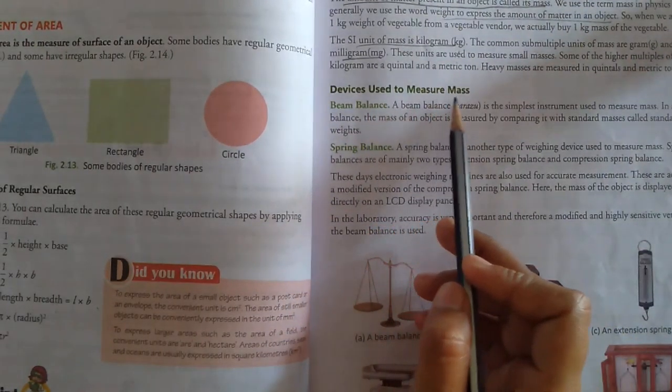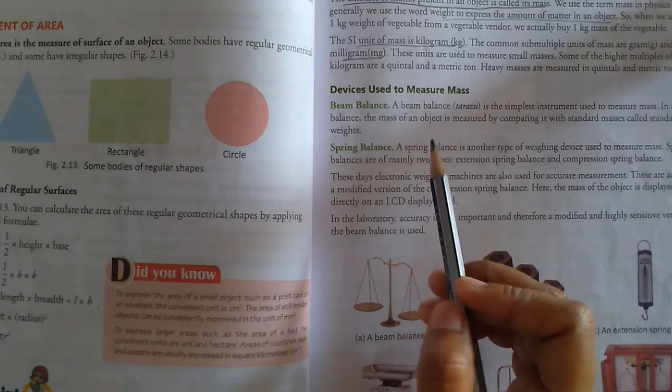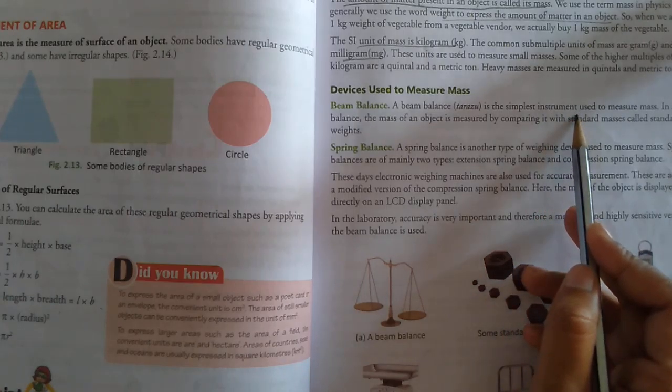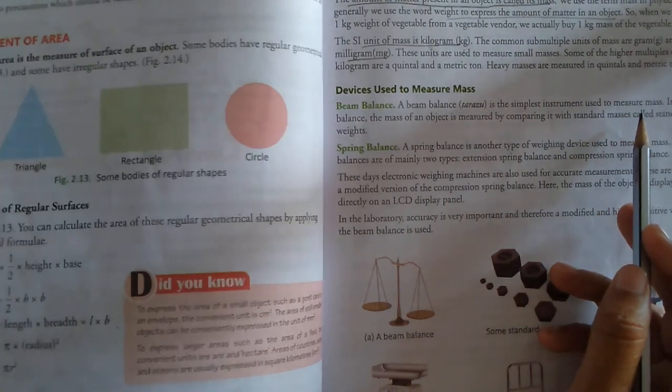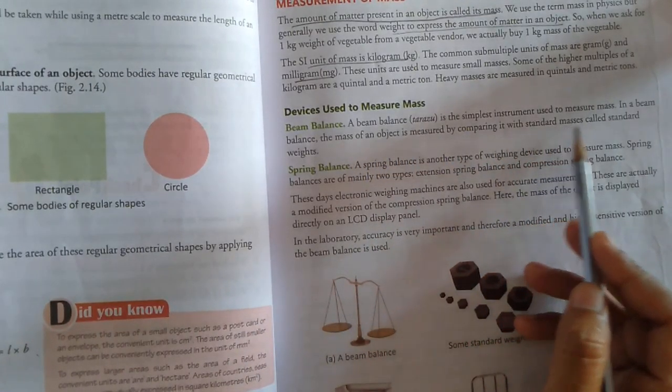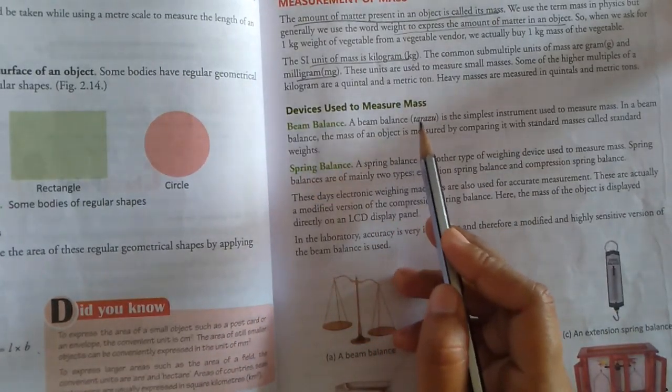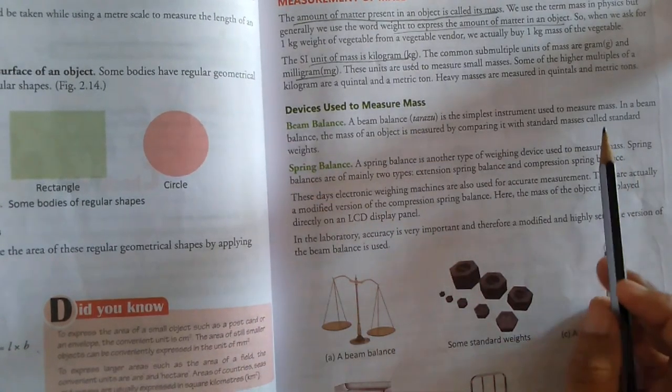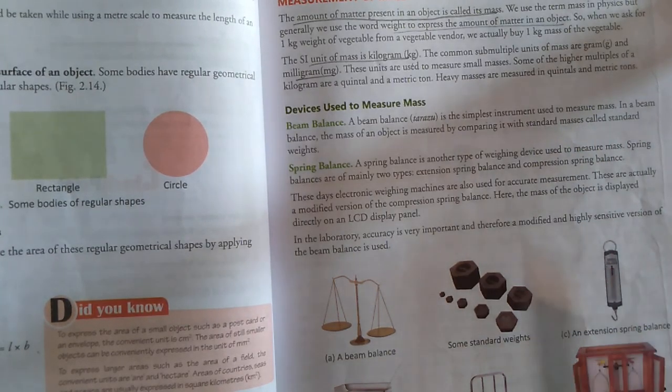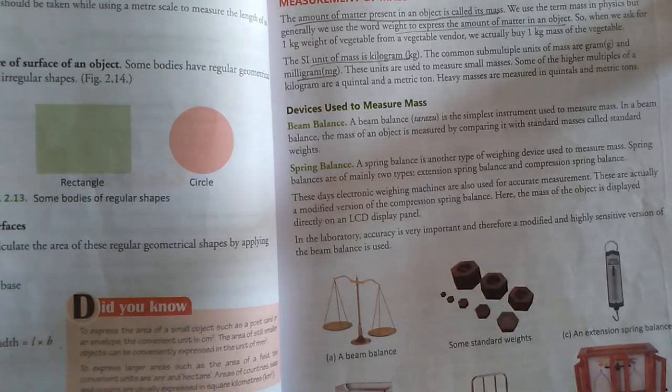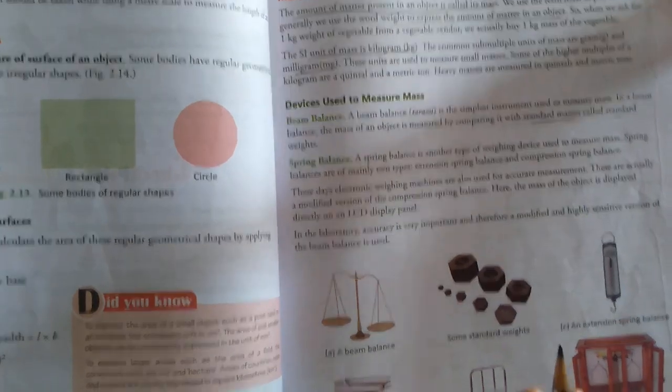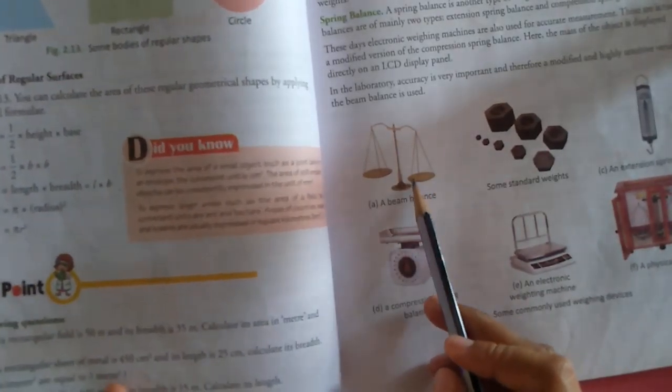Device used to measure mass. First one is beam balance. A beam balance is the simplest instrument used to measure mass. In a beam balance, the mass of an object is measured by comparing it with standard masses called standard weights. You can see in diagram, this is the diagram of beam balance.